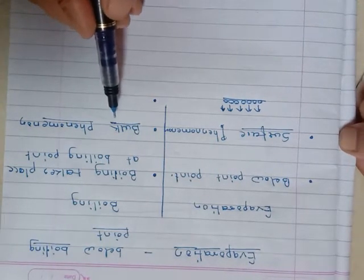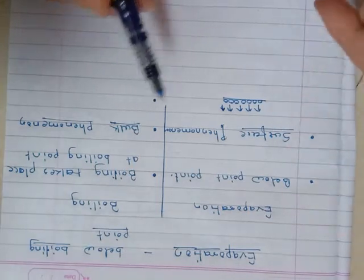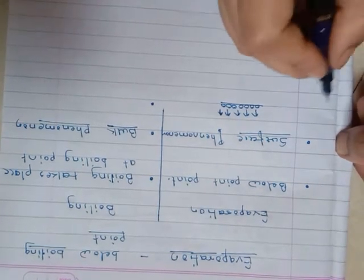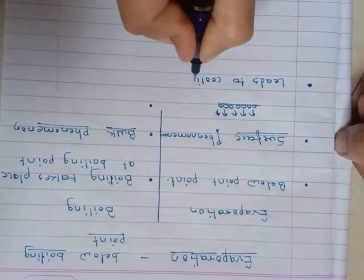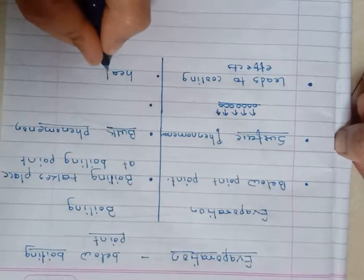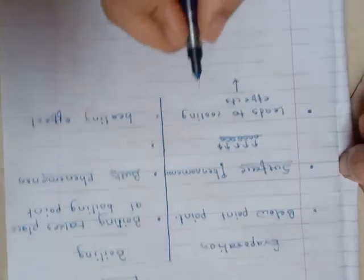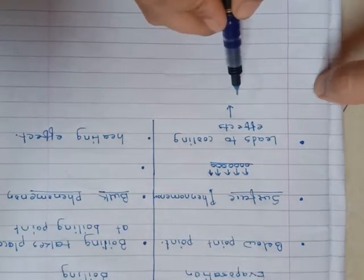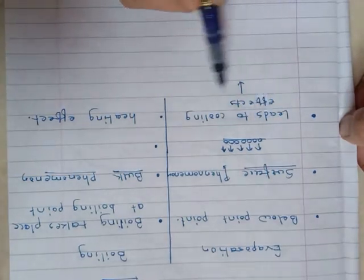During boiling, molecules can evaporate from the upper or lower surface because the liquid is getting mixed continuously, and molecules can evaporate from any part of the medium. Evaporation leads to a cooling effect, while boiling gives a heating effect. Just now we discussed why people sprinkle water on the ground — because as the water evaporates from the ground, it leads to a cooling effect.